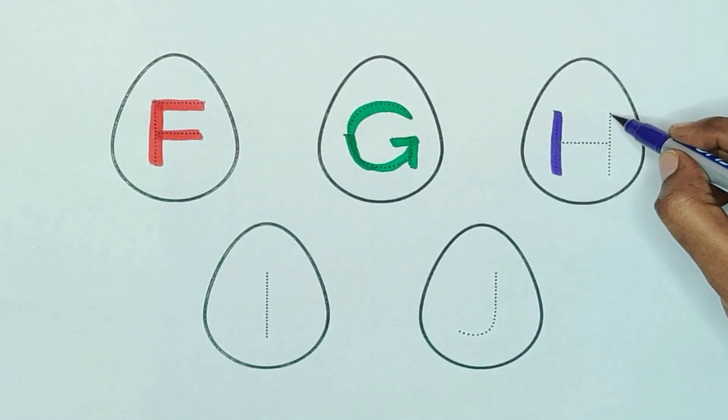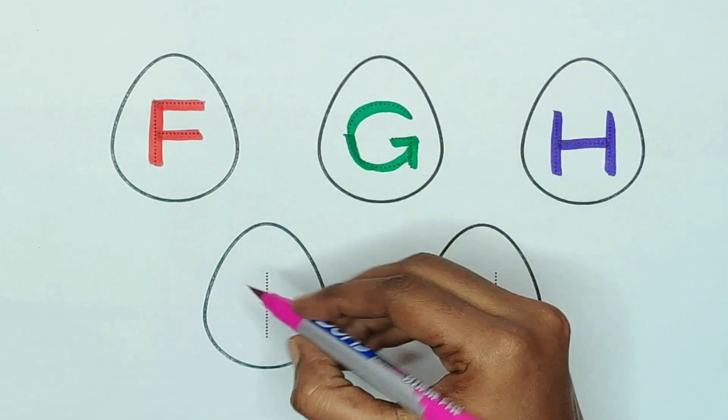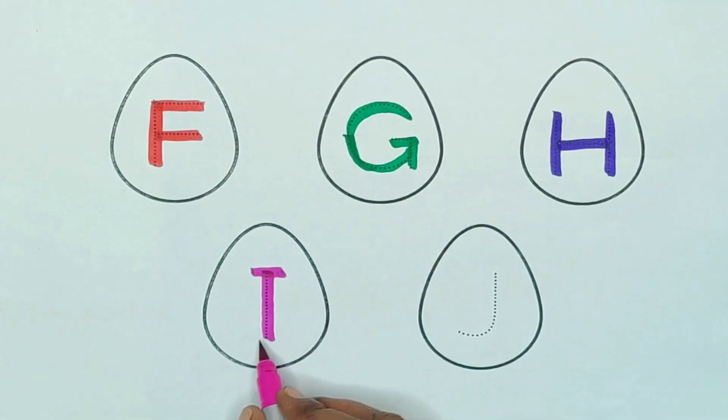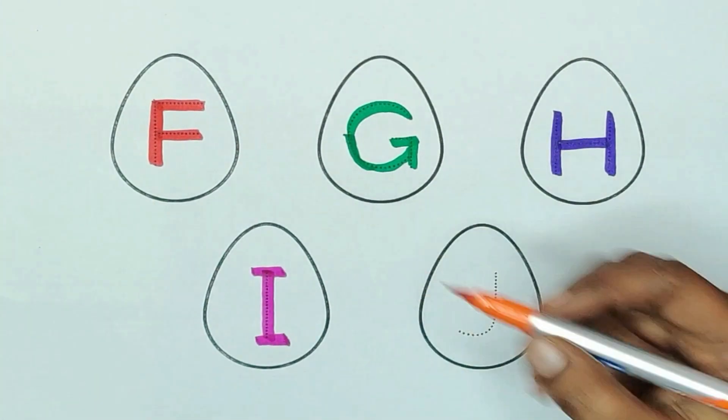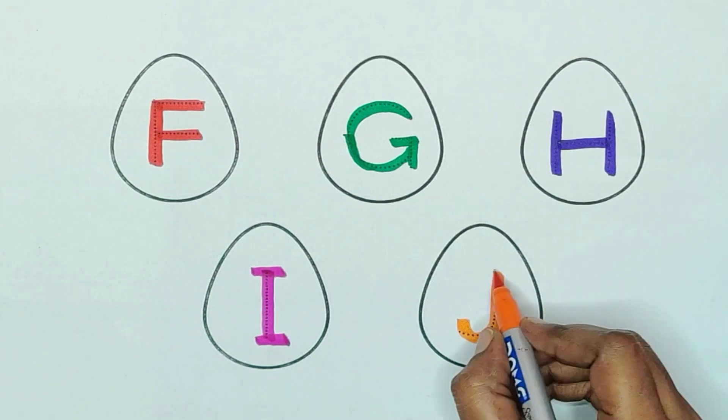Violet color H, H for hen. Pink color I, I for igloo. Orange color J, J for jar.